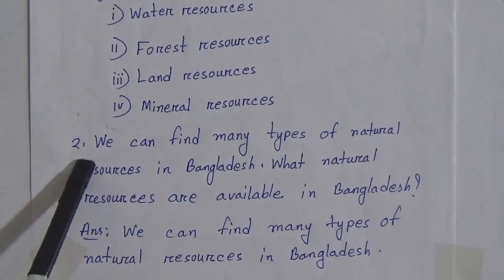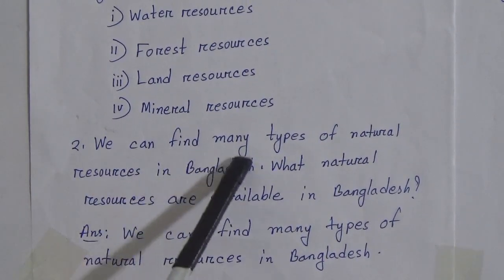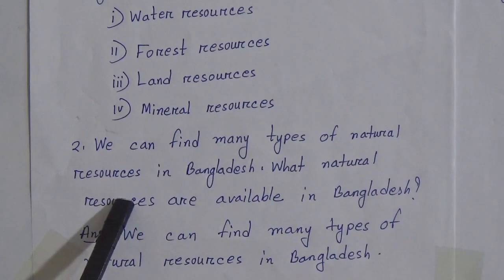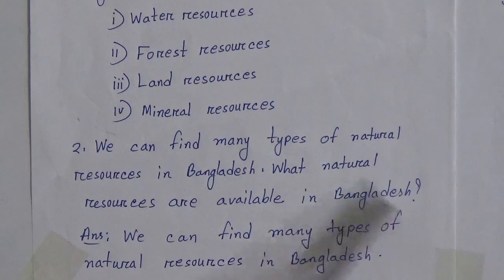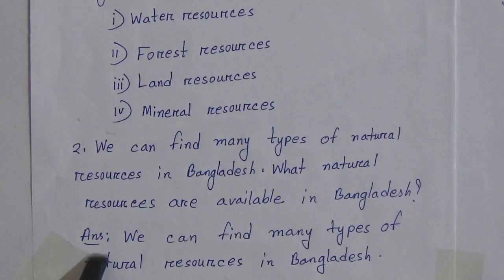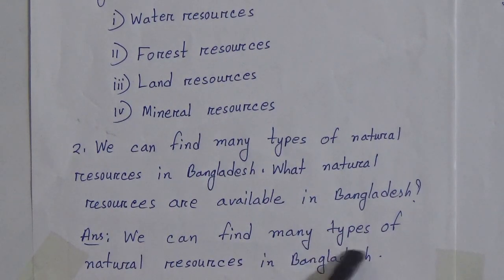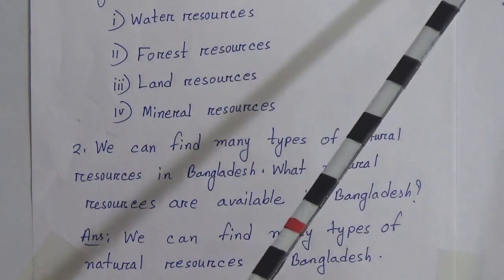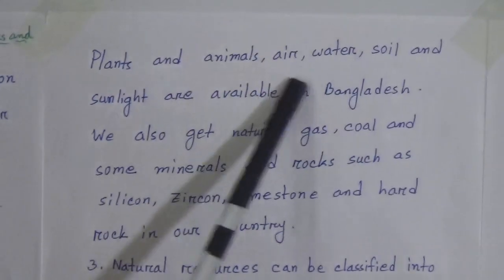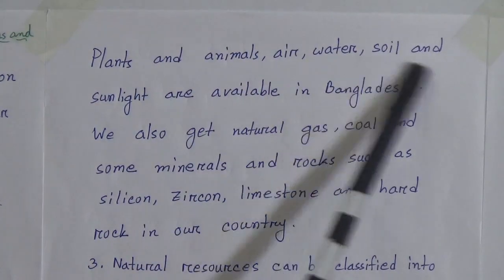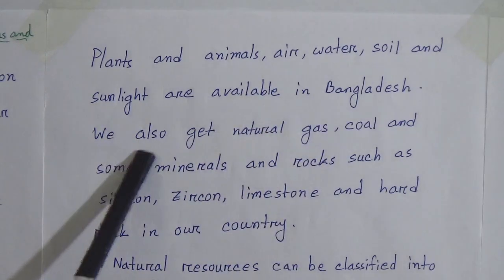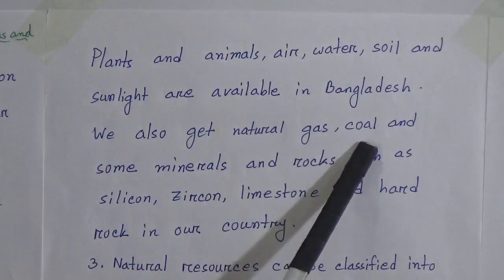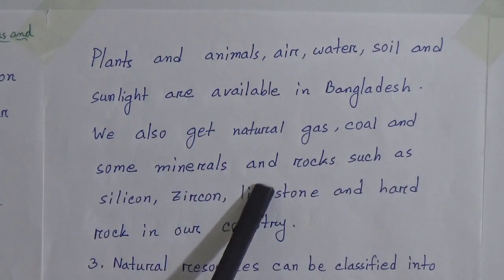Number 2 short question: We can find many types of natural resources in Bangladesh. What natural resources are available in Bangladesh? Answer: We can find many types of natural resources in Bangladesh. Plants, animals, water, soil, and sunlight are available in Bangladesh. We also get natural gas, coal, and other minerals.